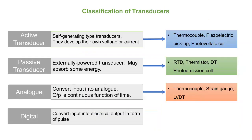One more broad classification is active transducers and passive transducers. Active transducers are self-generating — they develop their output in the form of electrical voltage or current without any auxiliary source. Normally, such transducers give very small output, therefore the use of an amplifier becomes essential. Examples are thermocouple, piezoelectric, and photovoltaic cell.